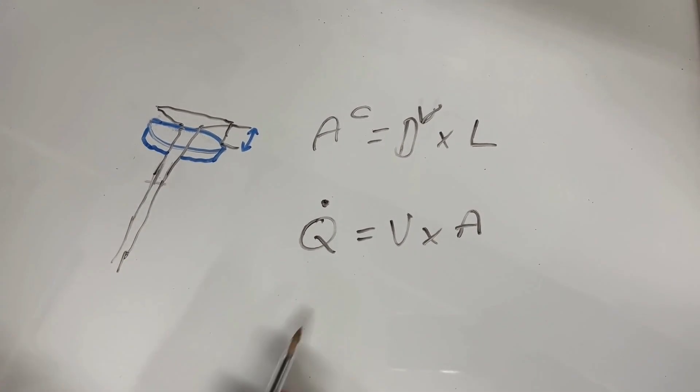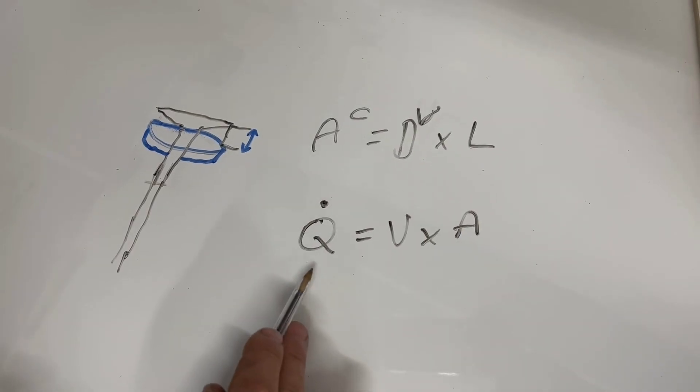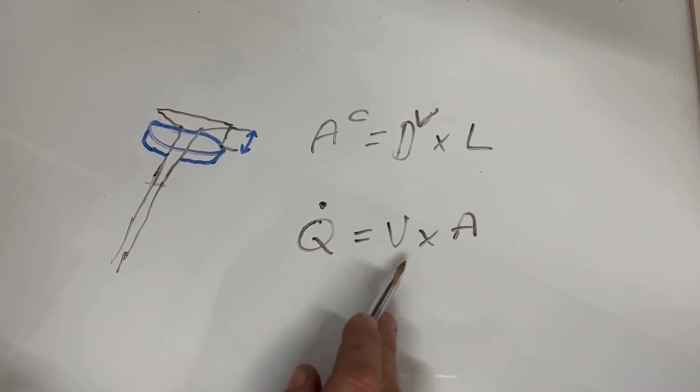But the flow rate through here, which here is volume flow rate, equals the velocity times the area.